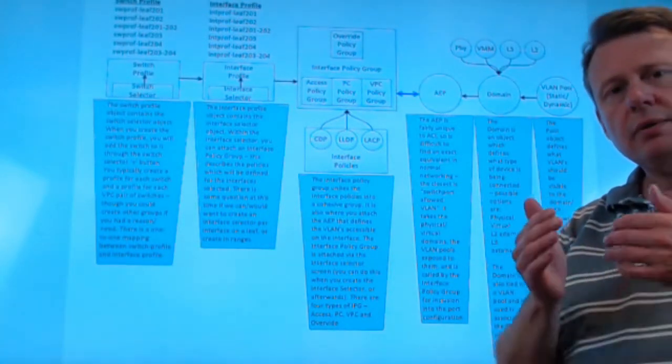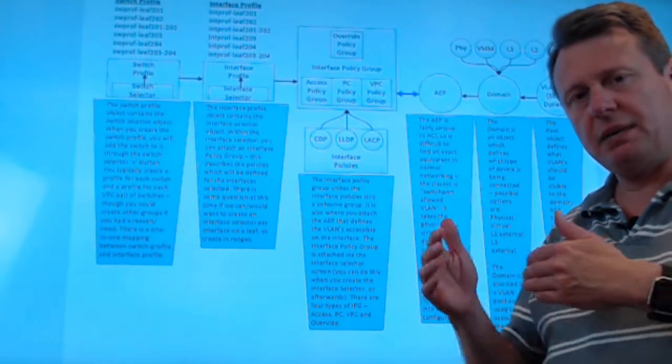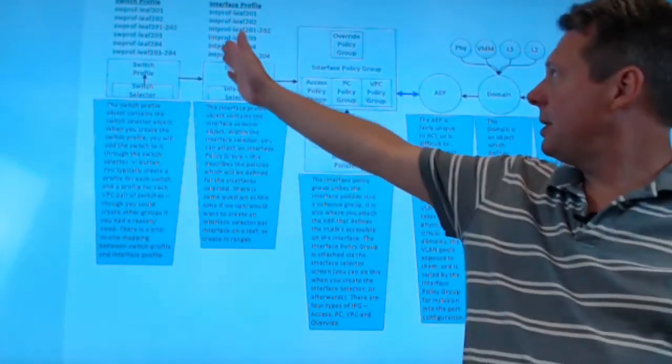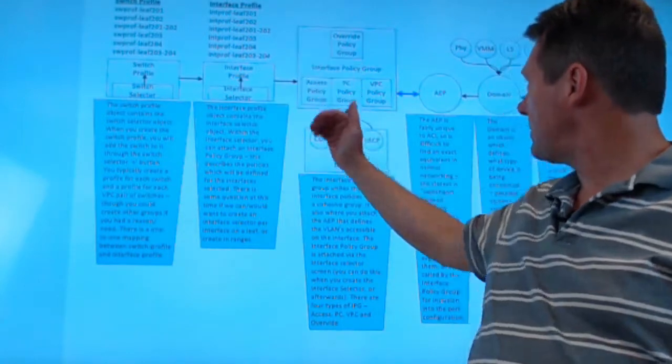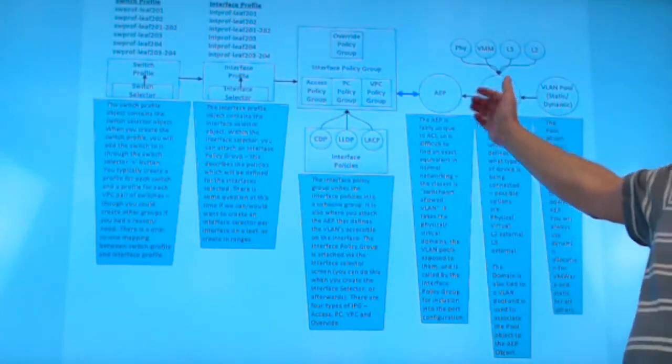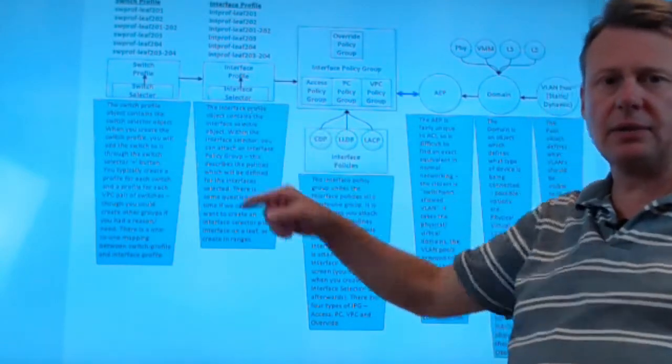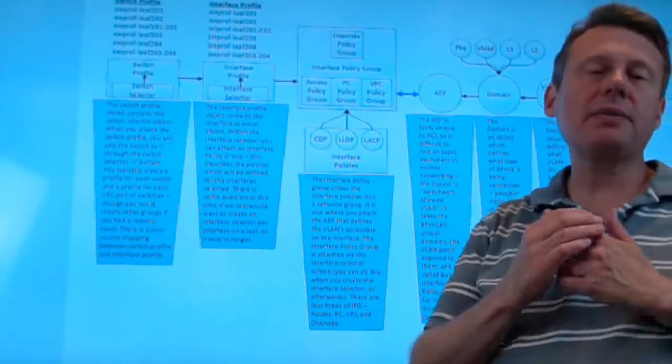Figure out your VPC workflow. I've got, as you can see, I have it here where I'm going profile selector, profile selector, pool domain, AEP, policies, policy group, and then I tie it back. That's what works for me. And that's what works for most of my clients who use ACI.